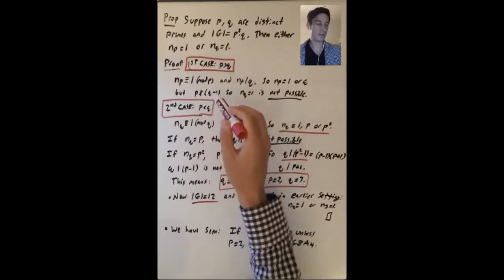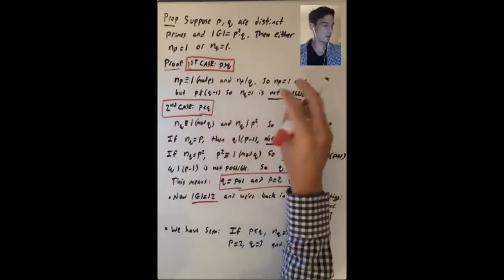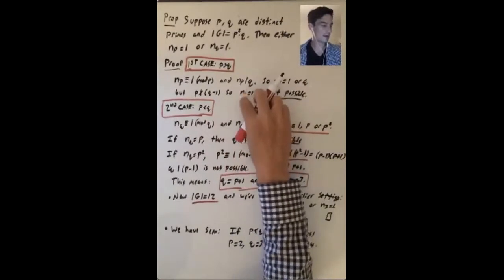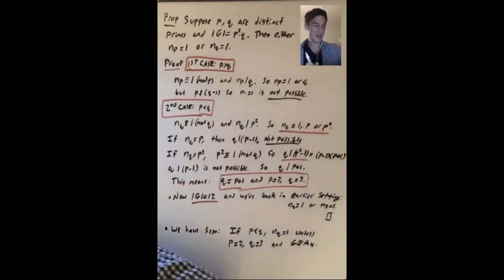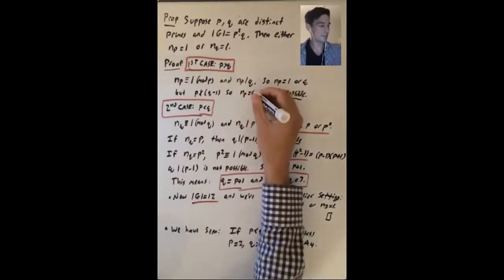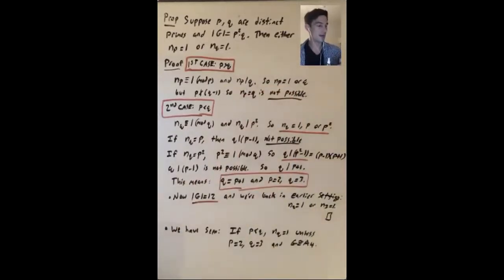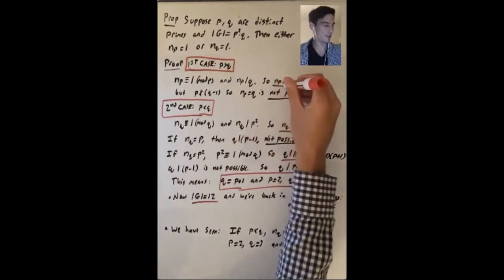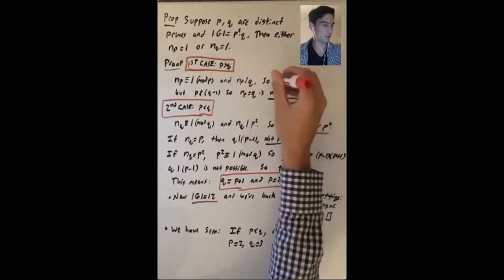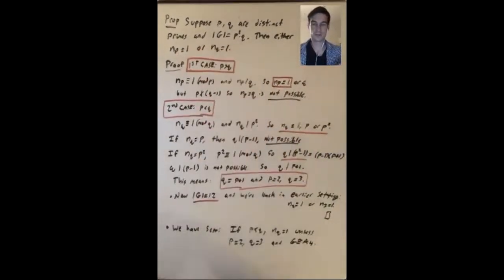But since p is bigger than q, certainly p doesn't divide q minus 1. So that means np equals q is not possible. So we conclude that np must be equal to 1, and that's what we were trying to prove.